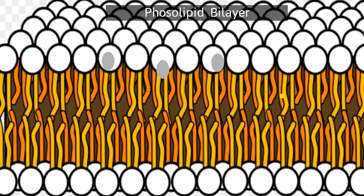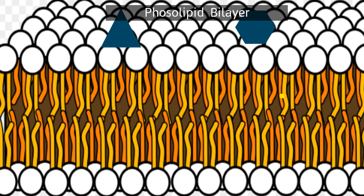Semipermeable means that certain objects can pass through the membrane and other objects cannot. A phospholipid bilayer means that the cell membrane is made up of two layers of phospholipids.